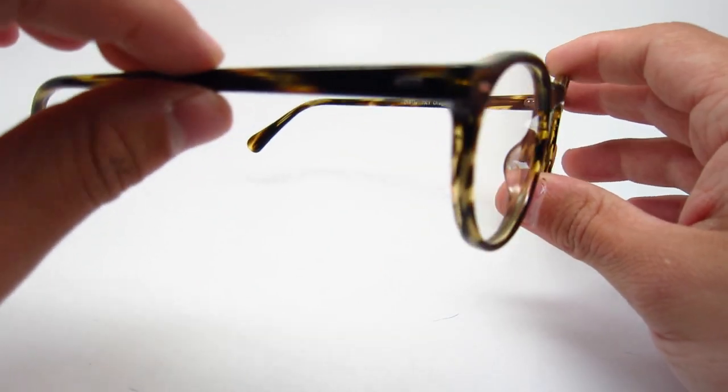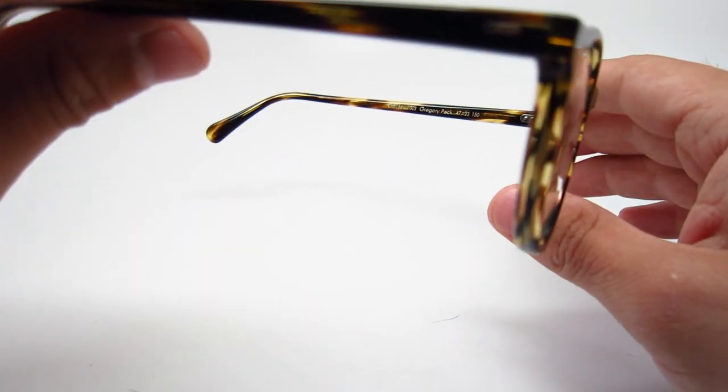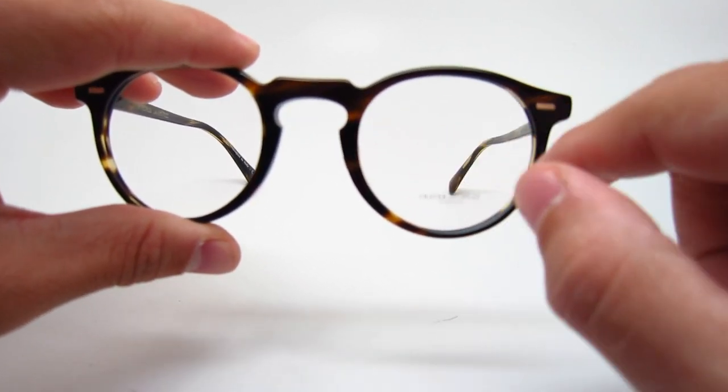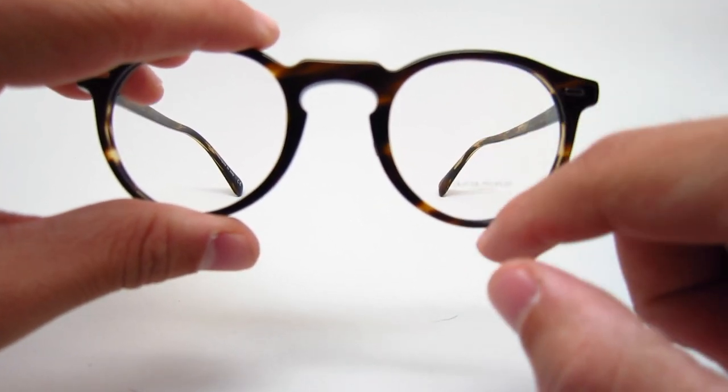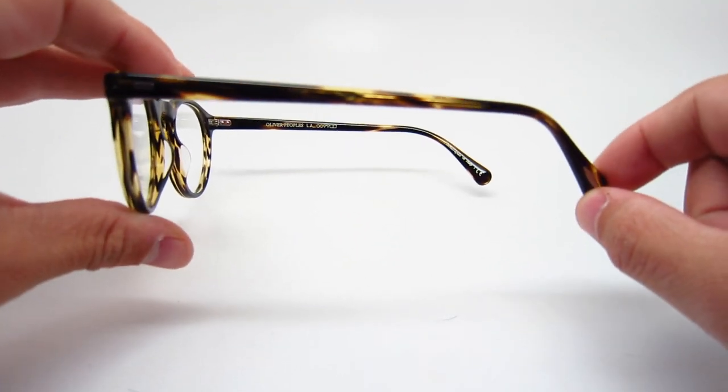And these do come in two different sizes. This particular one is the 47 size. So it's 47 millimeter lens width, 23 millimeter bridge width. It's going to be 42.6 millimeter lens height and a 150 millimeter temple length.